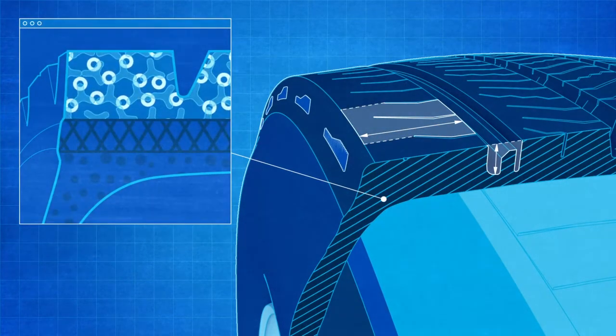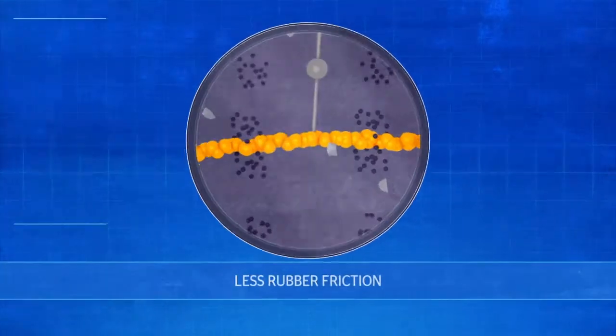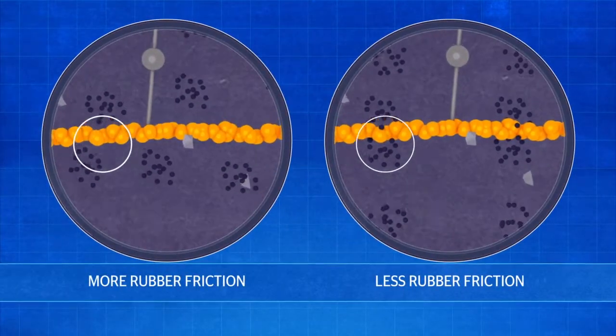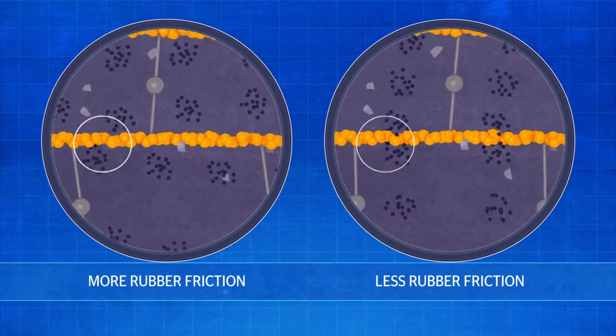To reduce rolling resistance, the compound needs to deliver low internal friction so that less energy is lost in the form of heat and fuel consumption falls.